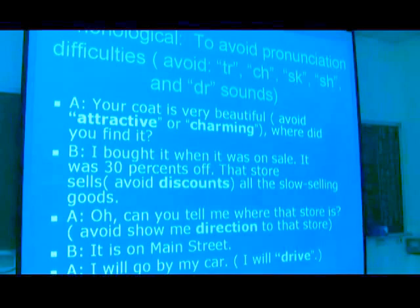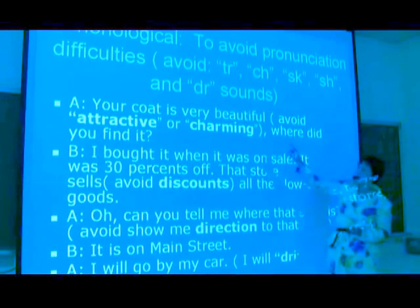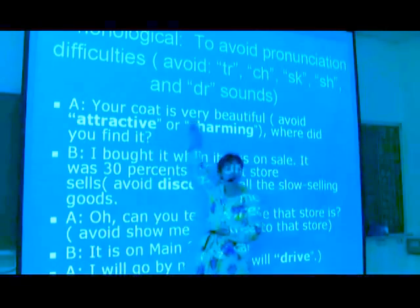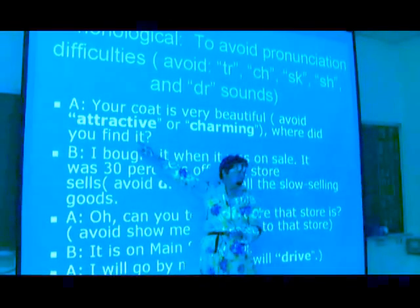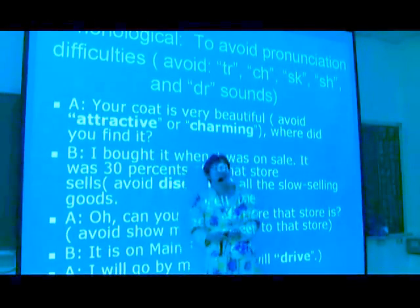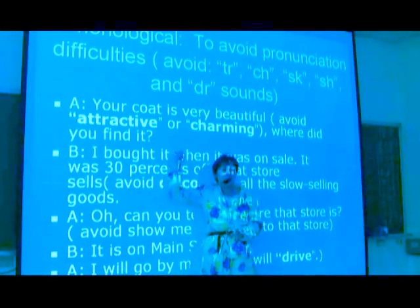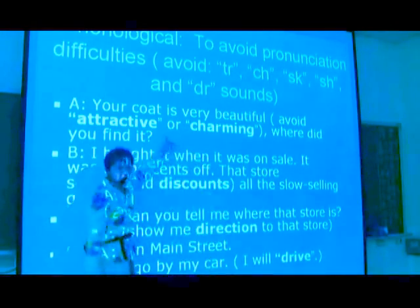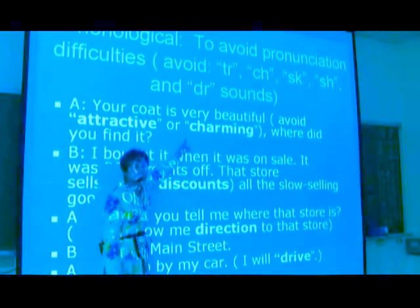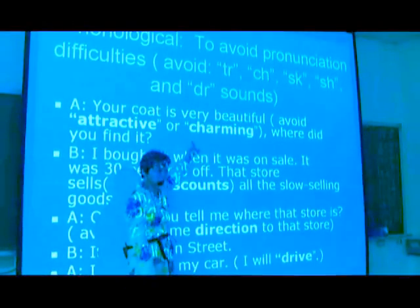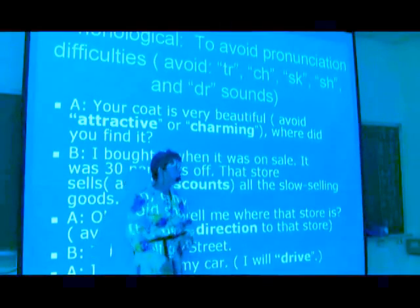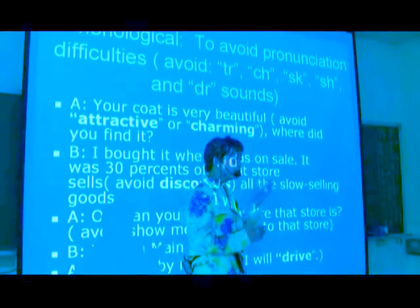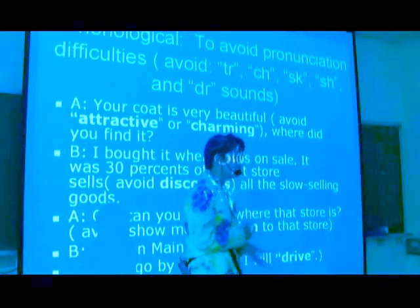For example, A says, 'Your coat is very beautiful,' instead of 'Your coat is very attractive,' because 'attractive' might be difficult for a non-native speaker to pronounce. So 'beautiful' is used to replace the word that is really difficult to pronounce. 'Attractive' has been avoided. 'Charming' might be a better word than 'beautiful,' but it has also been replaced, since 'charming' might be more difficult to pronounce for a non-native speaker. So this is the simplest way you can consider applying whenever you think some pronunciation might be too difficult for you.